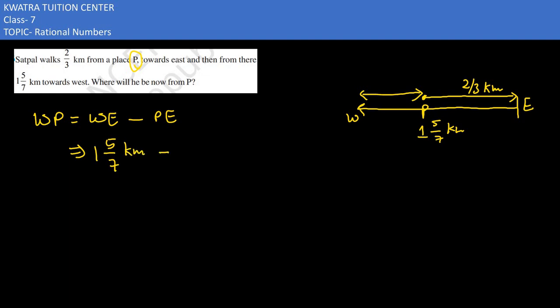And now minus PE from it which is 2 by 3 km. Now change the mixed fraction form. It would become 7. 7 plus 5 would be 12 by 7. And then you would have 2 by 3.